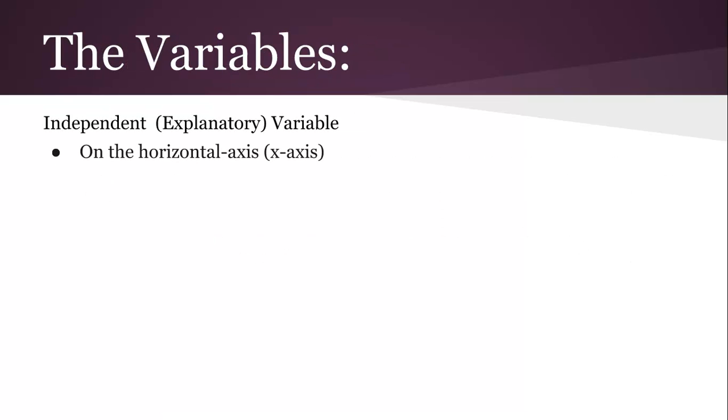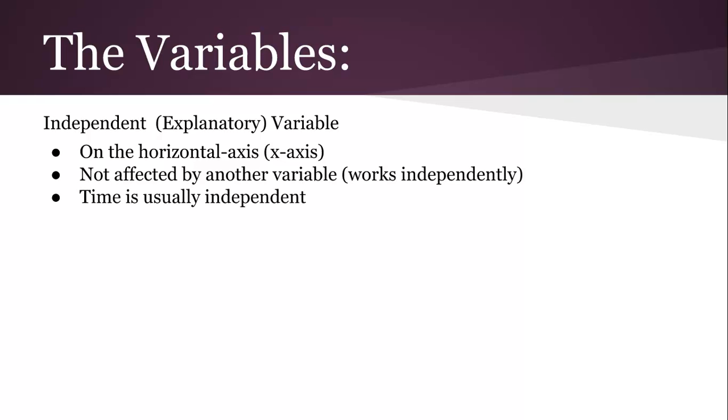The variables: the independent variable is the x-axis, we also call it the explanatory variable. It's not really affected by the other variable, it works independently. Time is usually independent, so like a year or a date could be independent. I say usually because it's not always. I like to talk about why it's not always. That's something to think about.